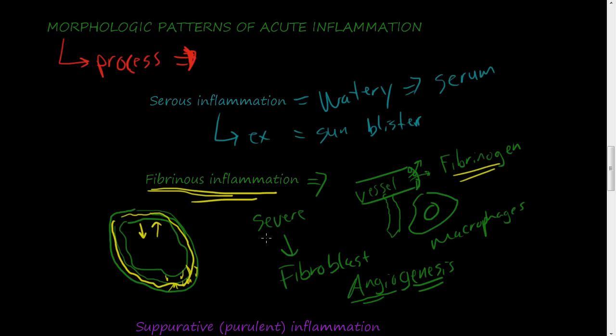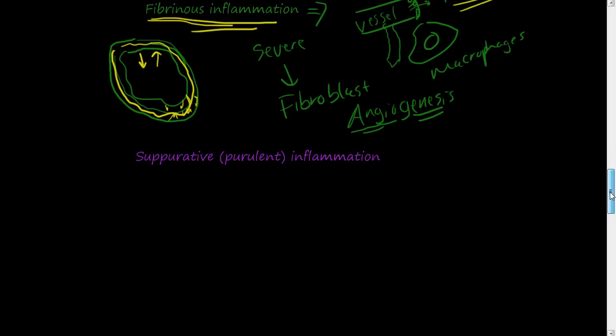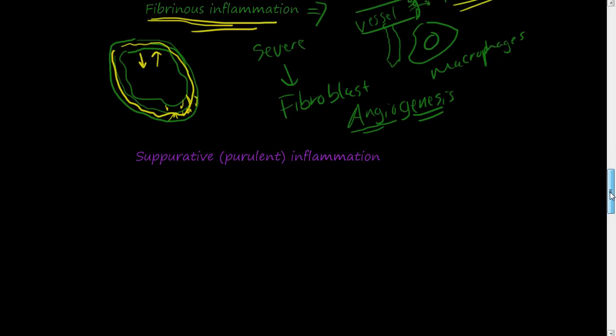And the last one is suppurative or purulent inflammation. And this just is pus. So there's certain bacteria that promote pus. Staphylococci are a certain type of bacteria that promote pus. Or if there's a lot of neutrophils and dead tissue in an area, that will increase the pus. And you usually have abscesses.